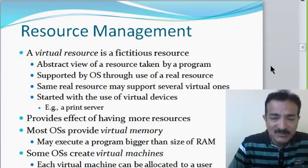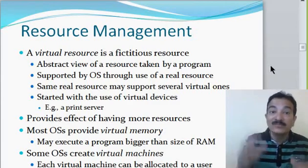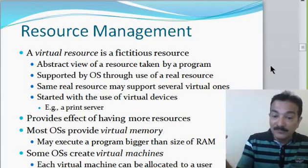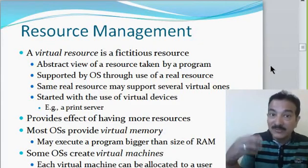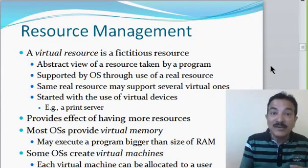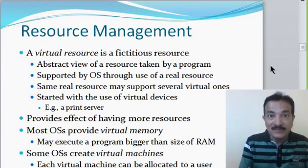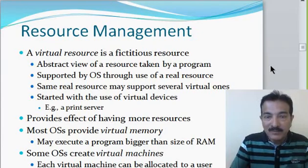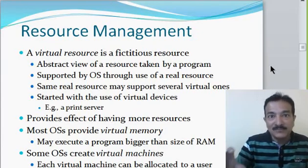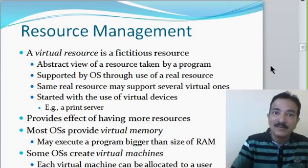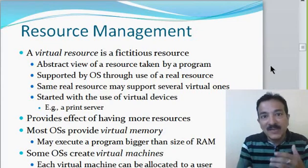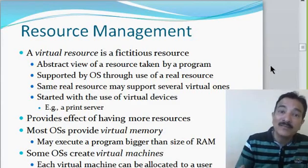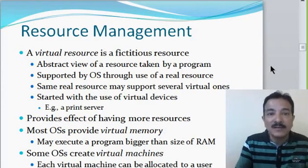The printer is where the concept of virtual devices came up. Every program that is executing can give a print command. Even if the printer is not able to print immediately because someone else has already sent a job, it will put the job in the pool and the program that gave the print command will go back feeling like it's already printed — it can keep doing what it is doing. From the resource pool, the printer will start taking jobs one by one and keep printing. The program never felt there was only one printer — it was made to feel there were many printers. This provides the effect of having more resources.